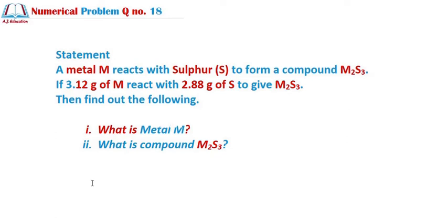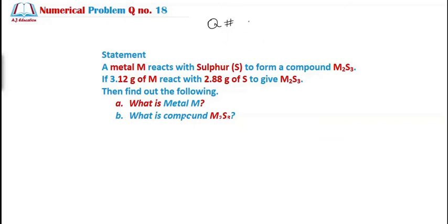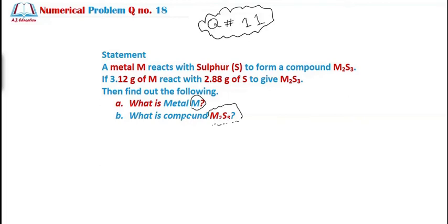This is a similar problem to question number 11. We're going to use the same rules. You can watch that lecture for question 11 from Exercise 1, Chapter 1. To recap: metal M reacts with sulfur and forms compound M2S3. If 3.12 grams of metal M react with 2.88 grams of sulfur to give M2S3, we need to identify the metal M and compound M2S3. It's a tricky but not very difficult numerical.